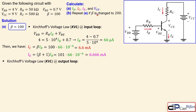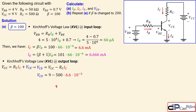For the collector-emitter voltage VCE, we apply KVL at the output loop. VCC equals the voltage across RC plus VCE. Using Ohm's law for the voltage across RC, we express VCE as VCC minus RC times IC. Substituting the given values yields VCE equal to 5.7 volts for this case with beta equal to 100.